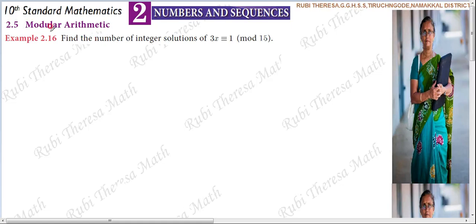Next, example 2.16: find the number of integer solutions of 3x is congruent to 1 mod 50. So, number of integer solutions.